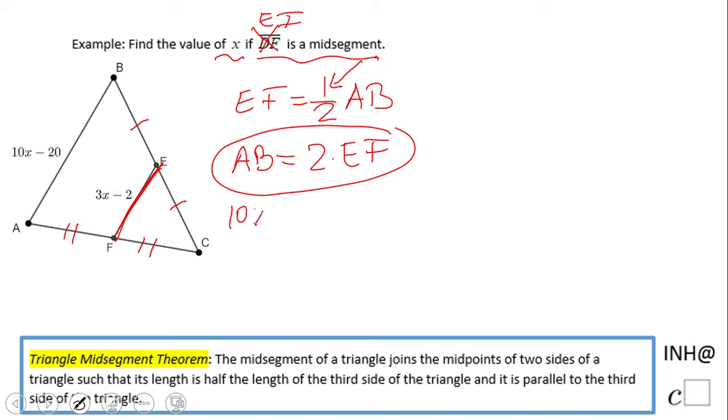And distributive property here, we get 10x minus 20 equals 6x minus 4. Subtract 6x on both sides, we get 4x minus 20 equals negative 4.